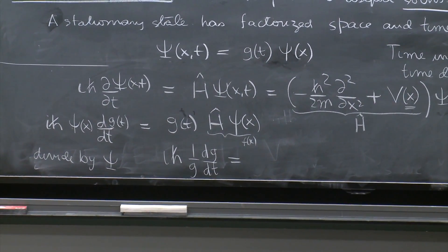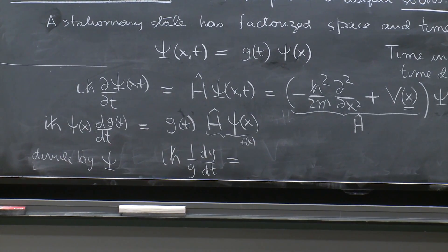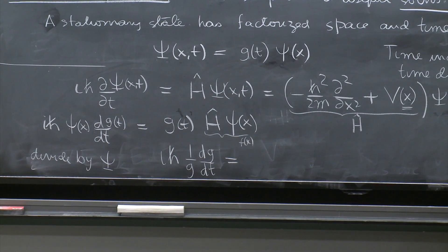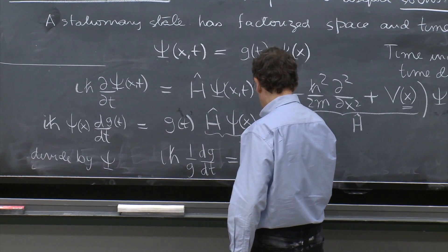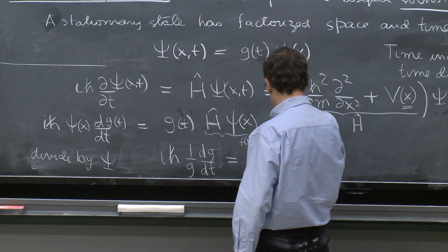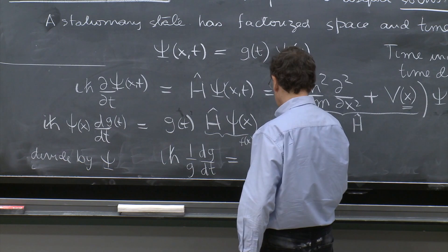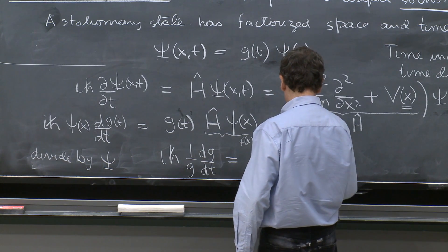On the right-hand side, you cancel the g and you get a 1 over psi. 1 over psi of x, H-hat psi of x.